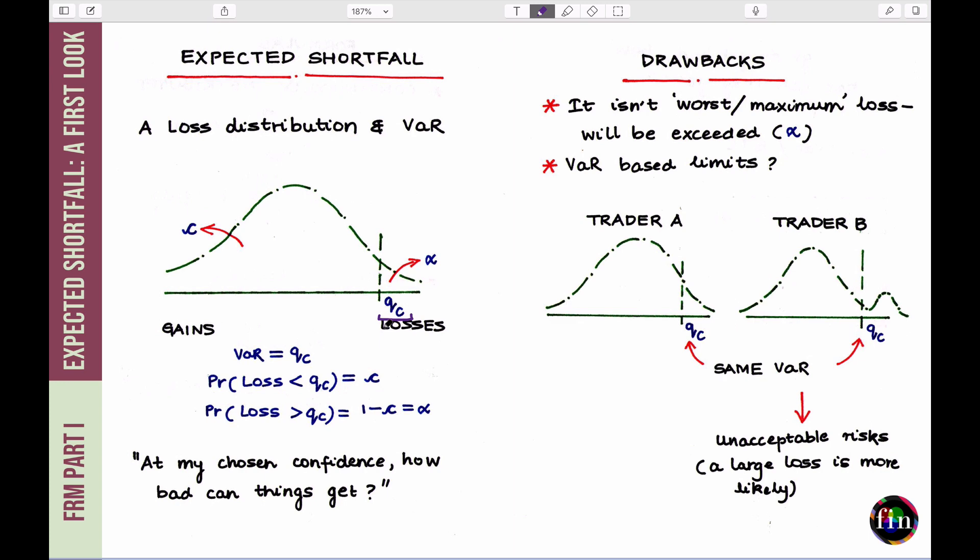That predetermined area is the level of confidence at which you are estimating the VAR. So if you mark off that point, let's call it QC, or it's the C quantile. Then to the left of that, you have an area of C, level of confidence. And to the right of that, you have an area alpha, which is level of significance.